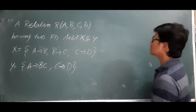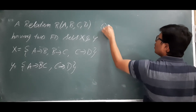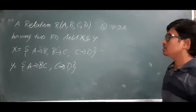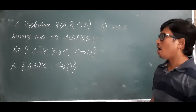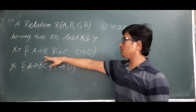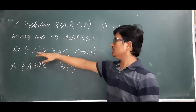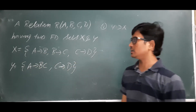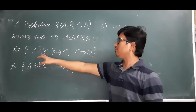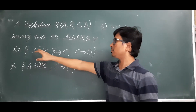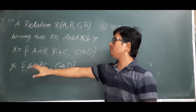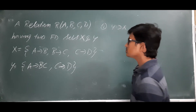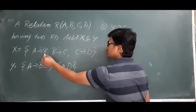Step one: we need to check whether Y covers X or not. The meaning of Y covers X is that all the FDs present in X can be derived from Y — we need to check this directly or indirectly.